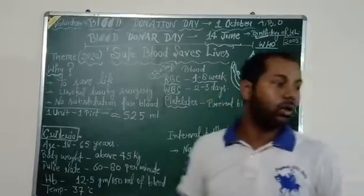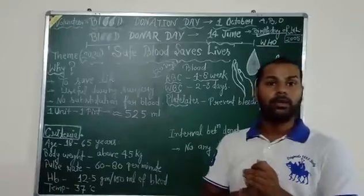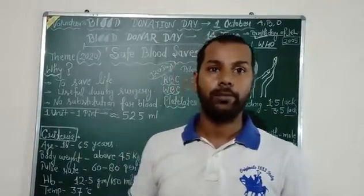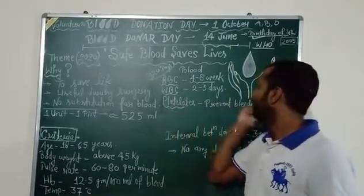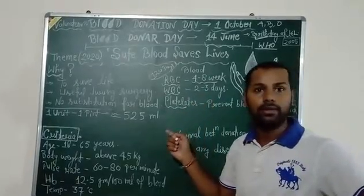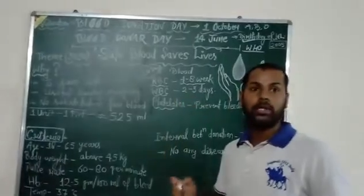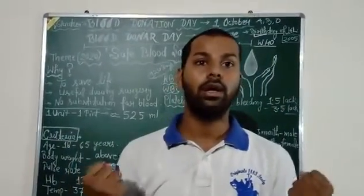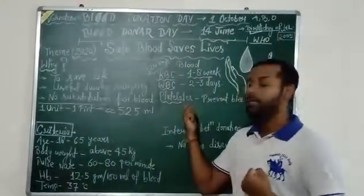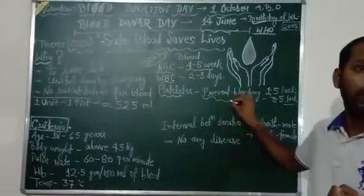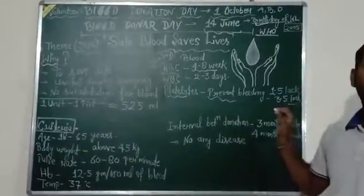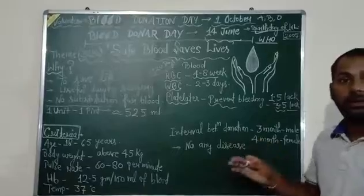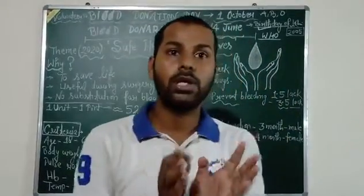Within four to eight weeks, new blood will form. What is the function of RBC — red blood cells? They carry and transport oxygen throughout the body. The second component is white blood cells, WBC, which survive for two to three days. The function of WBC is to increase and support the immune system. Platelets prevent bleeding. In a normal healthy person, platelet count should be between 1,50,000 to 3,50,000.